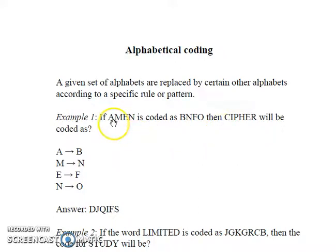By observation, you can see that A is coded as B, M is coded as N, E as F, and N as O. Did you see the pattern here? Every letter is coded by its next successive letter.